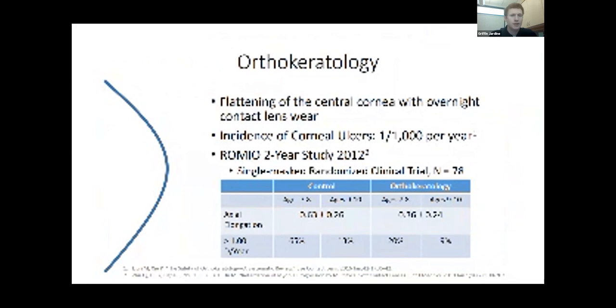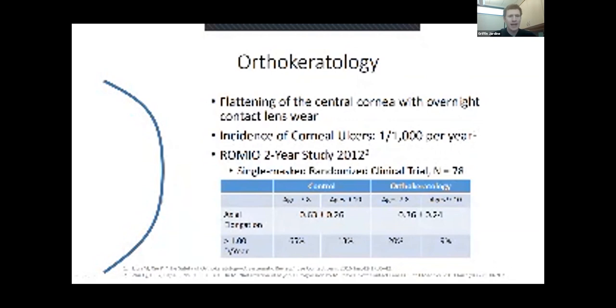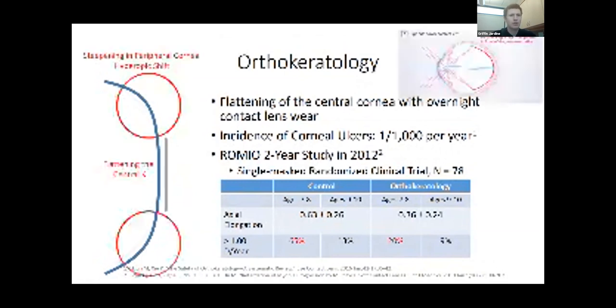Another treatment is orthokeratology for slowing down myopic progression. In continuing this theme of trying to create peripheral retina hyperopic defocus, with orthokeratology we're trying to flatten the central cornea. As we know about the cornea, if you're going to flatten one part, you're distributing that curvature elsewhere. By flattening the central cornea, we're steepening the peripheral cornea. That causes a hyperopic shift of the peripheral cornea, not too dissimilar from the multifocal contact lenses concept.